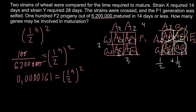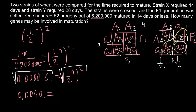To get rid of the square, we take the square root of both sides. On the left side we get approximately 0.00401, and this equals one-half raised to the power n — eliminating the square.